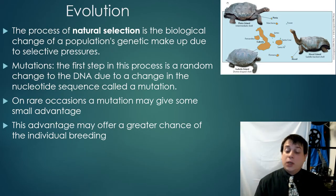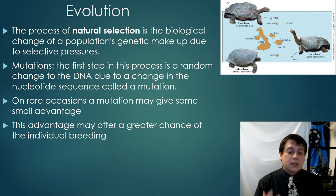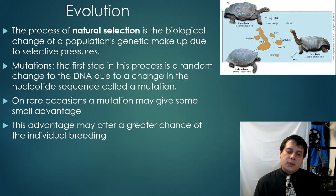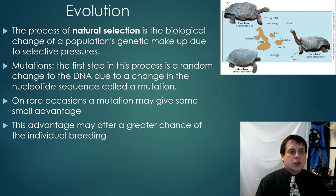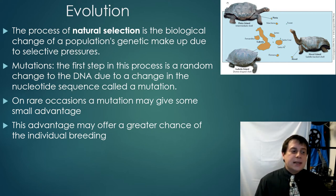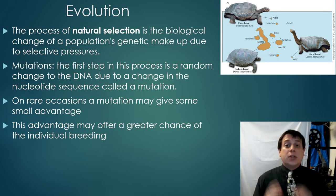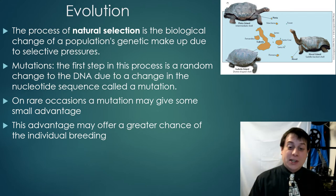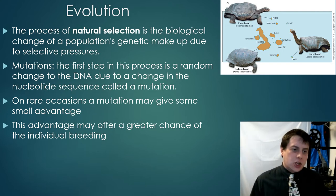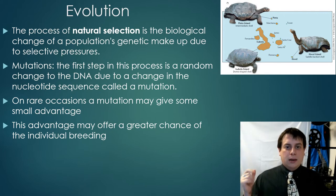Let's talk about evolution. We can look at the fossil record and see a progression of different adaptations and how animals have solved problems throughout time. The first process to discuss is natural selection — a term coined by Charles Darwin. The basic idea is that mutations in DNA occur naturally and randomly. Mutations happen all the time; you probably have a few in your DNA. Some mutations are beneficial, some are not. On rare occasions, a mutation may give a small advantage to an individual.